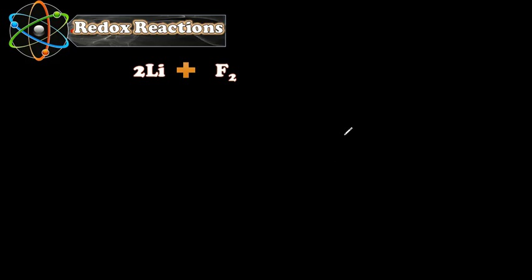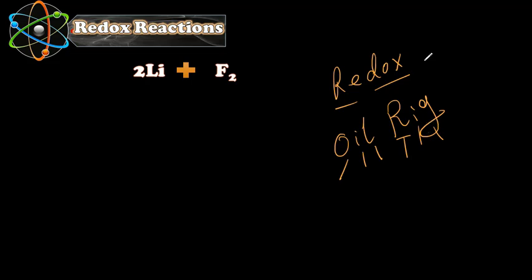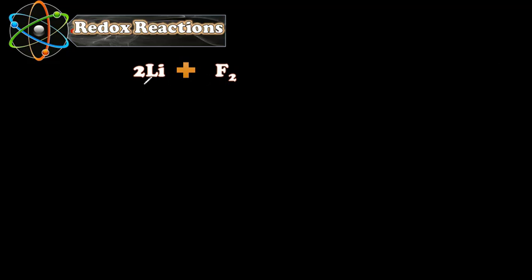Before we speak about electrolysis, we need to revise something about redox equations. Redox reactions involve both oxidation and reduction. OIL RIG: oxidation is losing, reduction is gaining electrons. Oxidation is the process in which atoms lose electrons and reduction is the process in which atoms gain electrons.